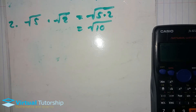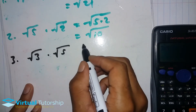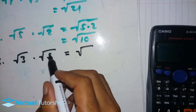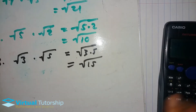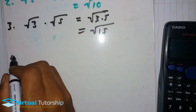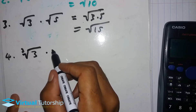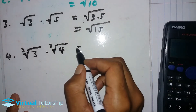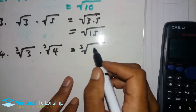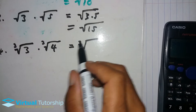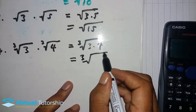Number three: square root of three times square root of five equals square root of 15. Another one: the third root of three times the third root of four. Since the roots are the same, it becomes the third root of three times four, which is the third root of 12.